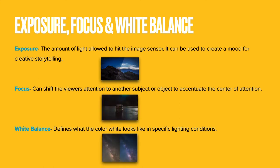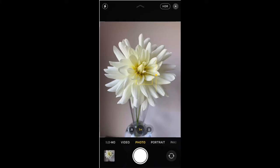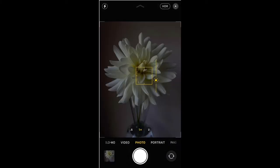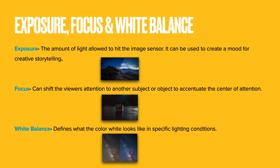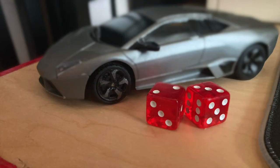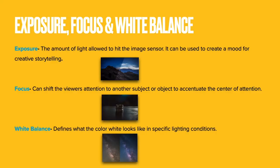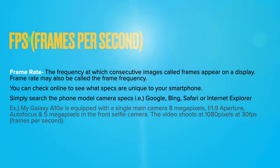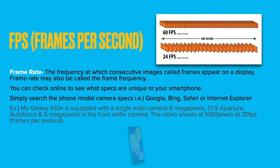Exposure, focus, and white balance. Exposure is the amount of light allowed to hit the image sensor and can be used to create a mood for creative storytelling. Focus can shift the viewer's attention to another subject or object to accentuate the center of attention. White balance defines what the color white looks like in specific lighting conditions. Frames per second — frame rate is the frequency at which consecutive images called frames appear on a display. Frame rate may also be called frame frequency. You can check online to see what specs are unique to your smartphone by searching the phone model on Google, Bing, Safari, or Internet Explorer.